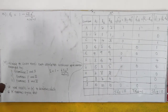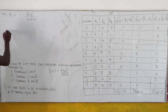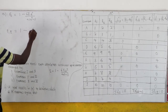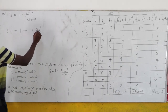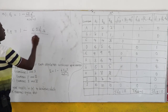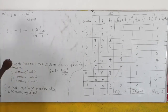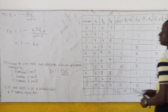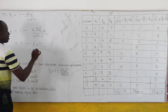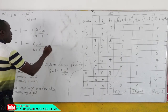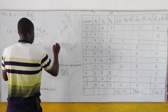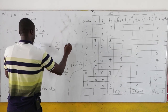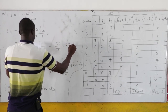The Spearman's rank correlation for examiners 1 and 3: r = 1 − (6 × 6)/(10 × 99) = 1 − 36/990 = 53/55 ≈ 0.9636.